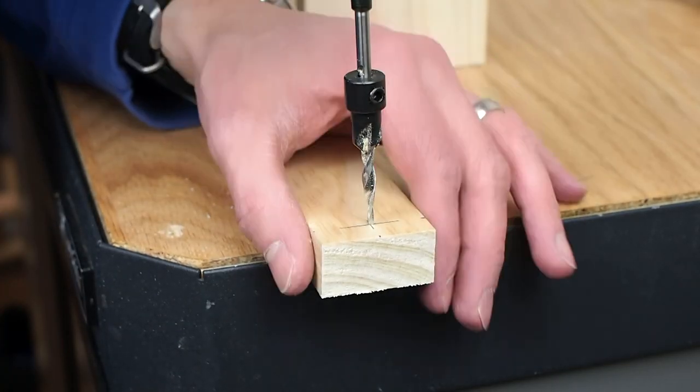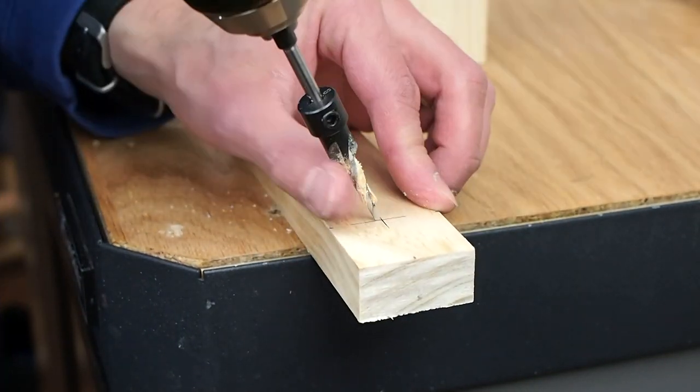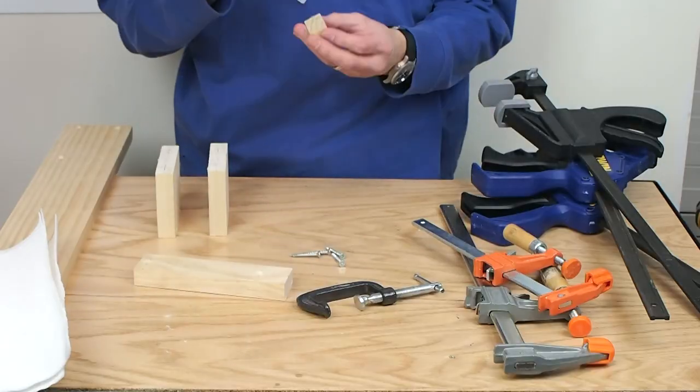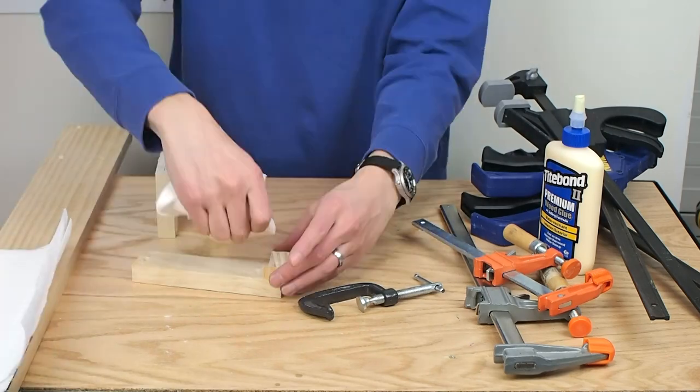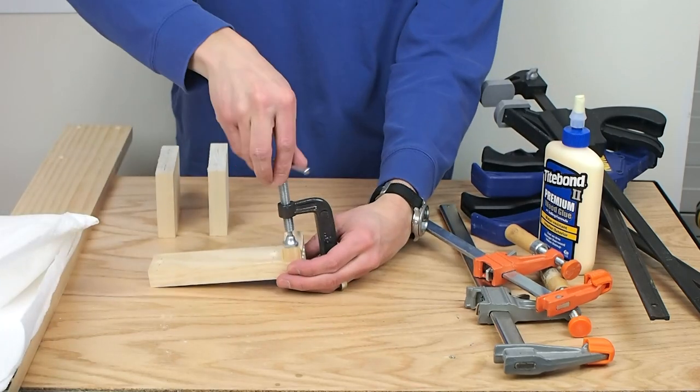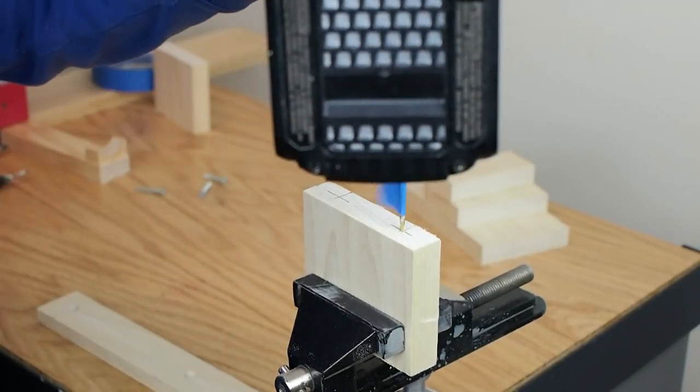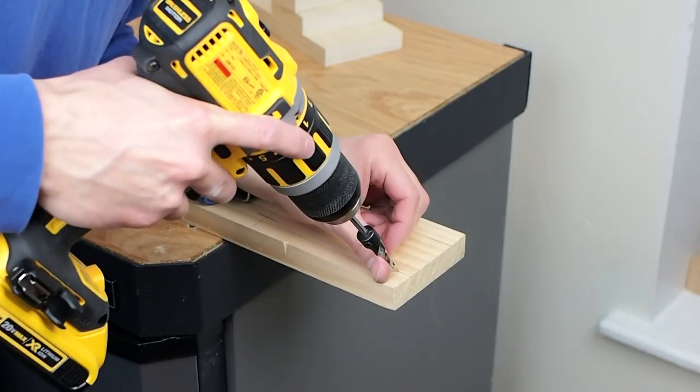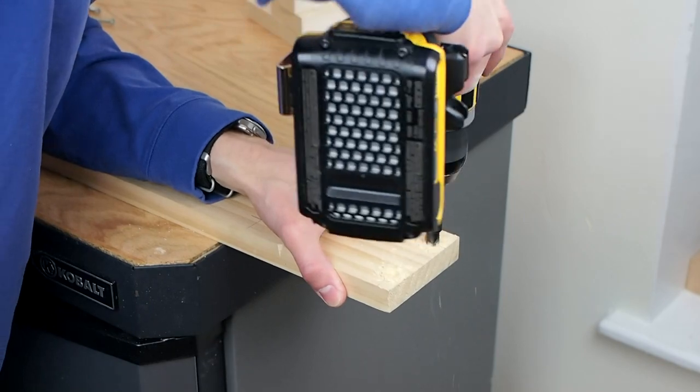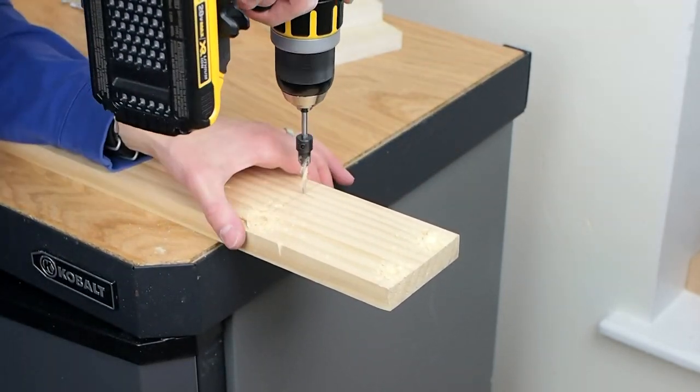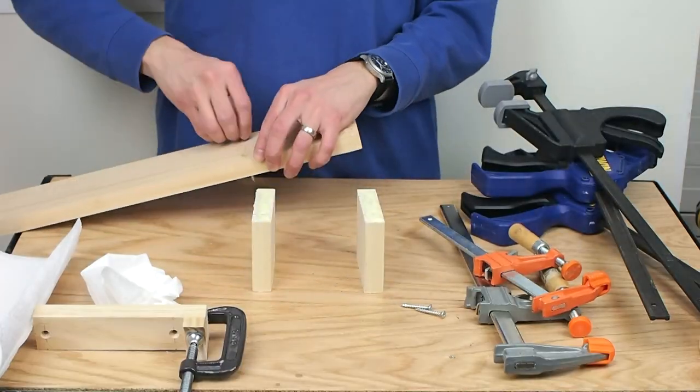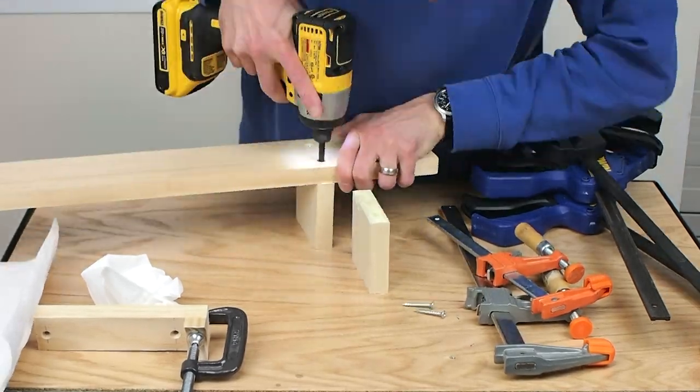I pre-drilled two holes in the horizontal support piece so I could screw it into the vertical pieces. I glued the rounded piece to the horizontal piece. I pre-drilled holes for the two vertical support pieces. Each one got two screws. I glued and screwed the vertical pieces to the base and let those dry.